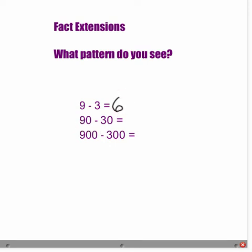I am noticing in my second one, I still have a 9 and I still have a 3. What happened was, we have added a 0 to the end. So instead of 9 ones minus 3 ones, when I put this 0 here, now I know I am talking about tens. 9 tens would be 90. Minus 3 tens would be 30. 90 minus 30 would give me an answer of 60.